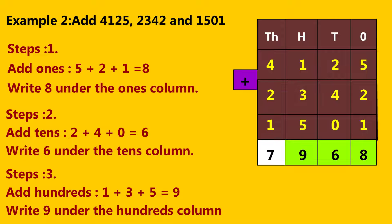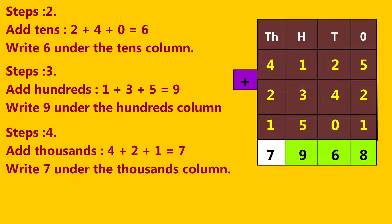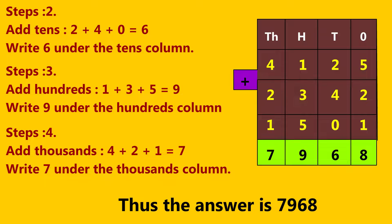Step 4: Add thousands. Four plus two plus one is equal to seven. Write seven under the thousands column. Thus the answer is 7,968.